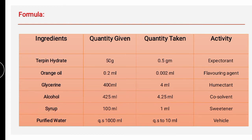The next ingredient is alcohol, acting as a co-solvent. A co-solvent is used to increase the solubility of the active in the primary vehicle. Primary vehicles used include syrups, invert syrup, tolu syrup, sorbitol solution, and chloroform water. Since terpene hydrate is insoluble in water, alcohol helps with solubilization and also helps maintain viscosity. Syrup acts as a sweetener and purified water acts as the vehicle.